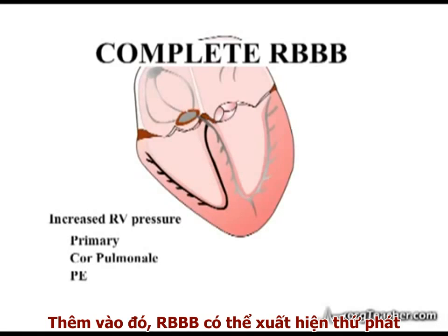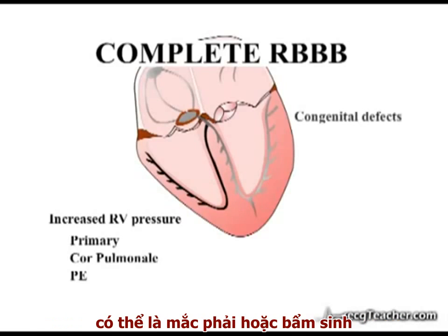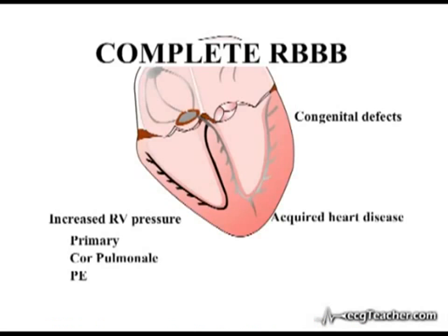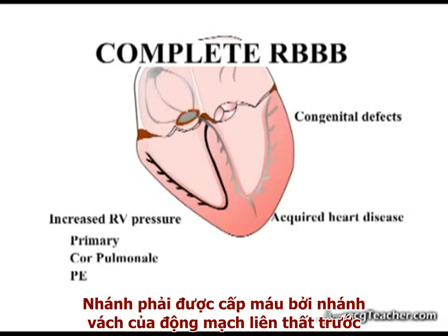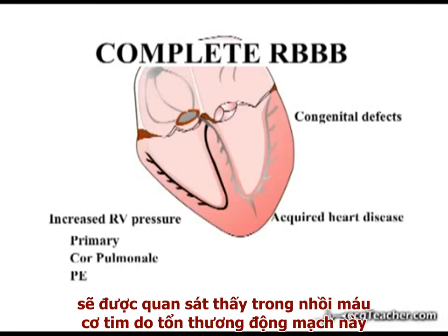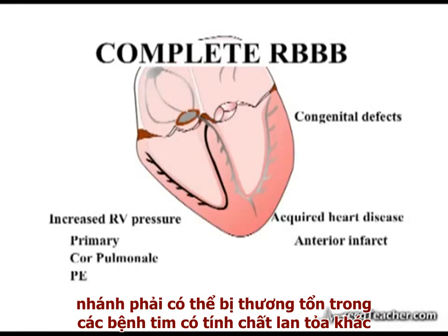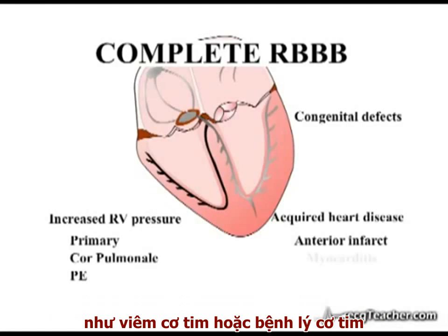In addition, right bundle branch block may occur secondary to a wide variety of heart diseases, either congenital or acquired. The right bundle branch is supplied by septal branches of the left anterior descending artery, and so new onset right bundle branch block may be observed in myocardial infarction secondary to obstruction of this artery. Amongst many other potential causes, the right bundle branch may also be affected in diffuse cardiac diseases such as myocarditis or cardiomyopathy.